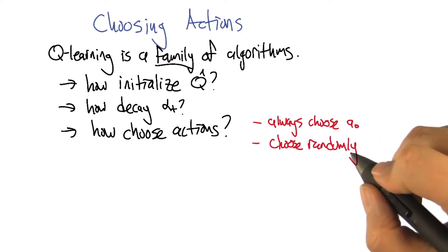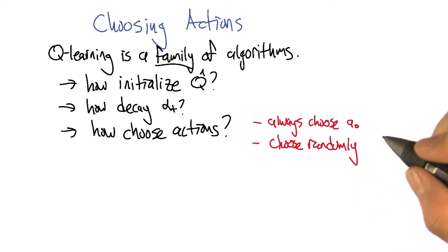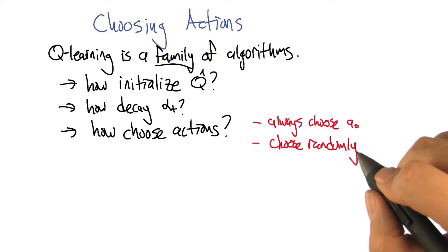Another idea would be to choose randomly. And this seems kind of good in that we are going to visit all the states that are visitable and we will try all the actions that are actionable. And we could actually learn Q this way. But as you pointed out, this is not a great idea because we may have learned Q, but we haven't really used it. We haven't really chosen actions using what we've learned.